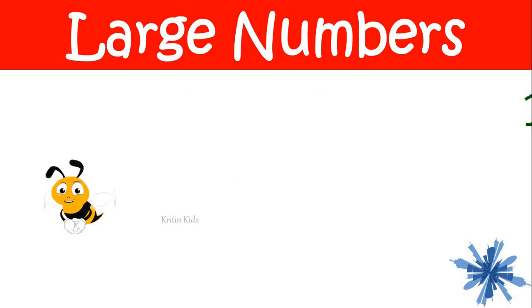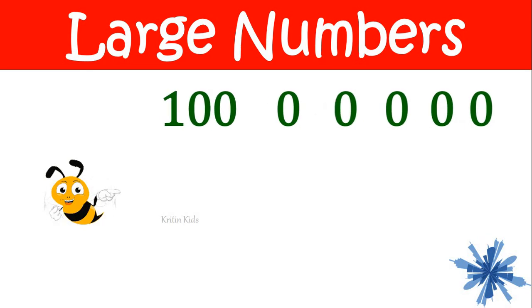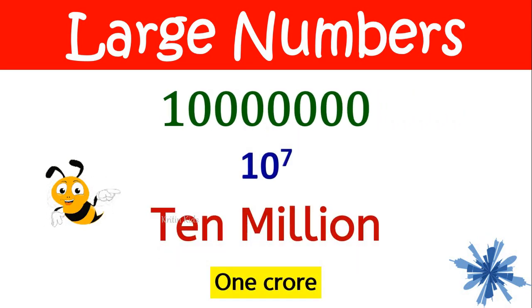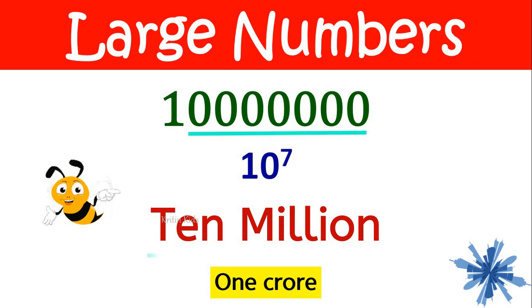Now let me add one more zero — this becomes ten million, which is also called as one crore. One followed by seven zeros is ten million.